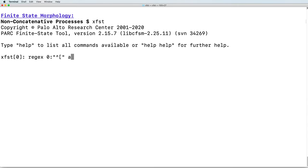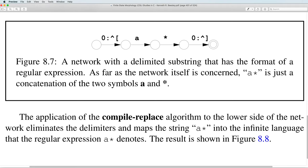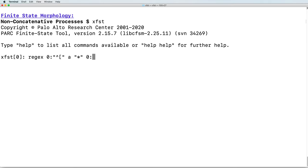On the next arc, we will have an A on the upper and lower sides. On the next arc, a star on the upper and lower sides. And finally, the last arc: epsilon on the upper side with the special symbol on the lower side.